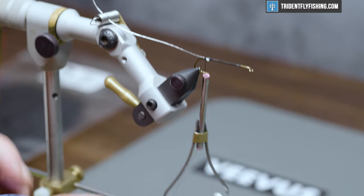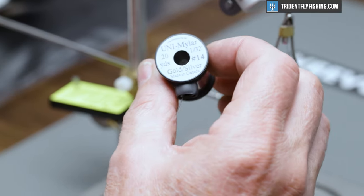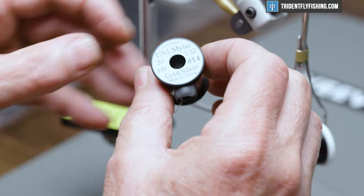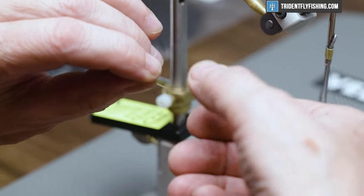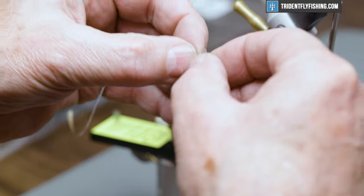And the body of the fly is going to be made up of Uni Mylar silver gold tinsel. This is size 14. And the body is silver, so we're going to tie it in with the gold side facing us.